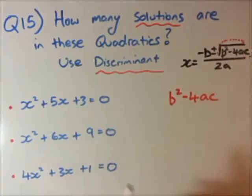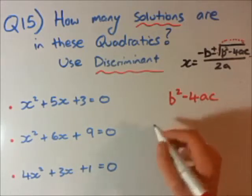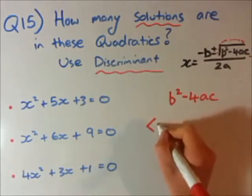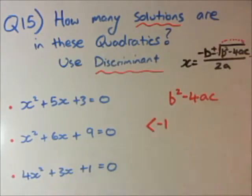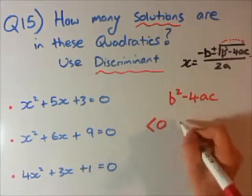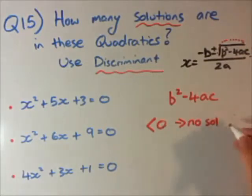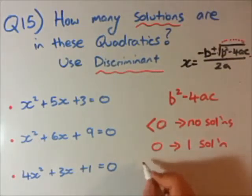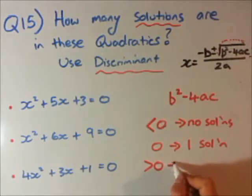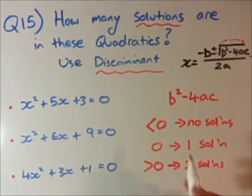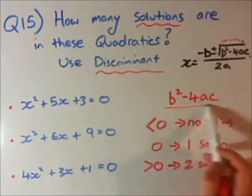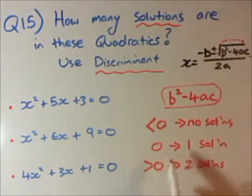How do we find how many solutions there are? Three scenarios: if the discriminant is less than zero, there will be no solutions; if it equals zero, there will be one solution; and if it is greater than zero, there will be two solutions. When you calculate b squared minus 4ac — which I'll show with three examples — if your answer is less than zero, no solutions; zero, one solution; greater than zero, two solutions.